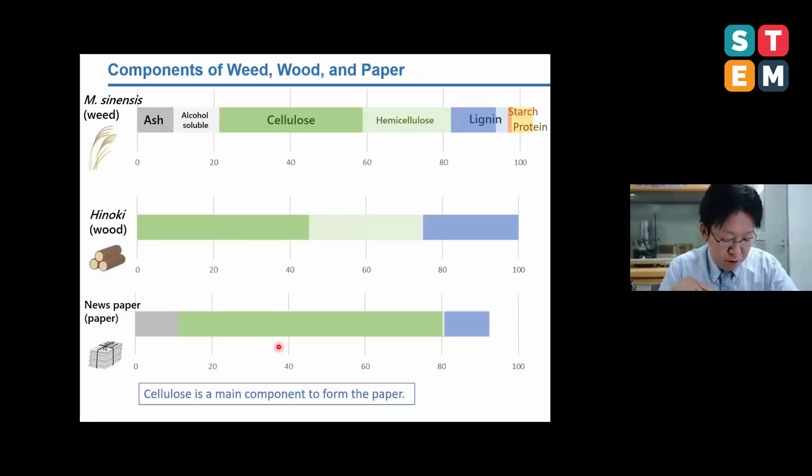The components of weed, wood, and paper are shown in this graph. As the example of weed, we selected Miscanthus sinensis, which is widely grown wild from Okinawa to Hokkaido. We call it Susuki in Japanese. The cellulose occupies about 40%, hemicellulose 20%, and lignin 50%. In the case of newspapers, cellulose is a main component to form the paper. The content of cellulose is higher than those of weeds and woods.